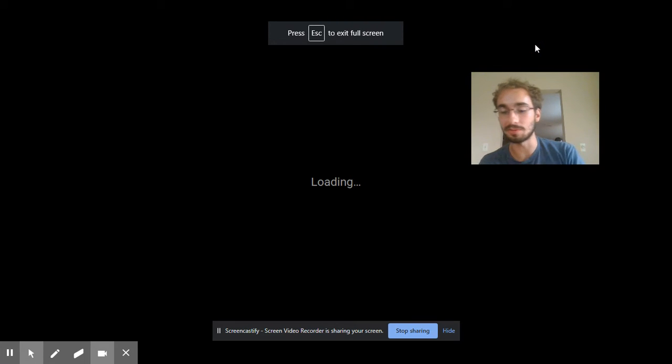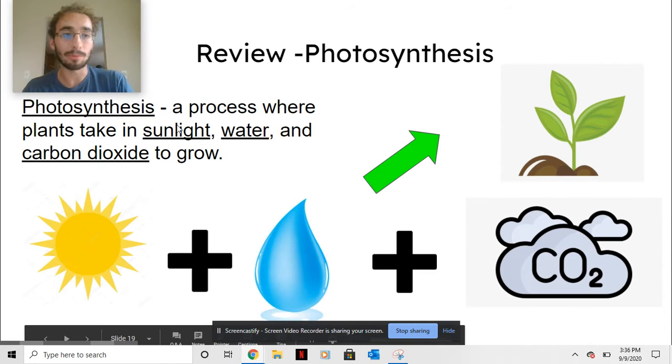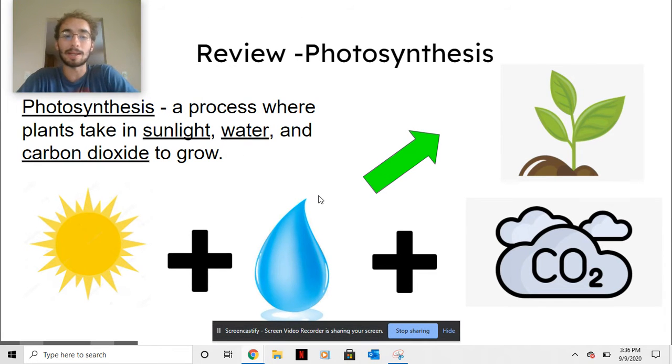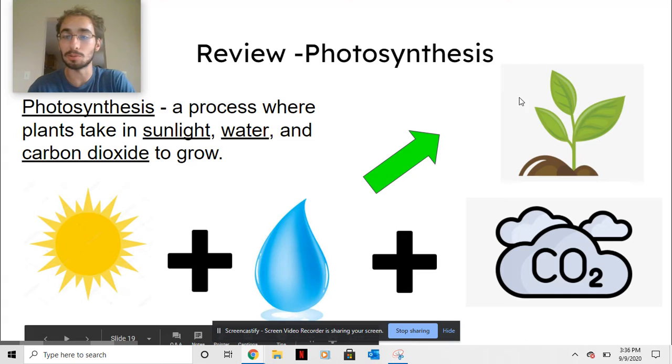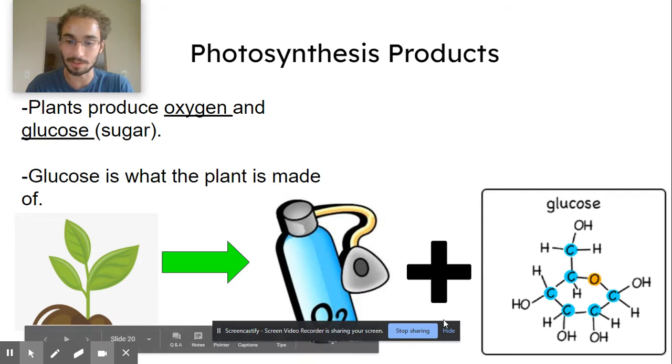And please pause the video as many times as you need and rewatch. So first off, here's some review. Photosynthesis is a process where plants take in sunlight, water, and carbon dioxide to grow. So it takes in these three things to get a plant or algae. And then these are the two things that plants make after photosynthesis.